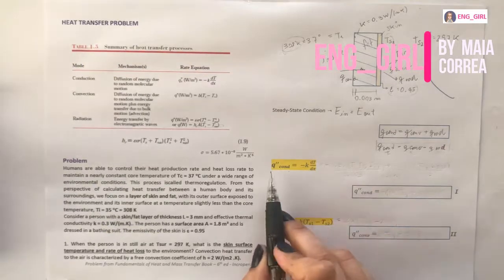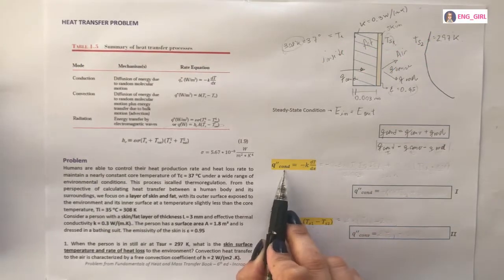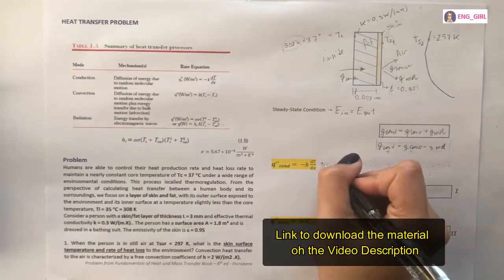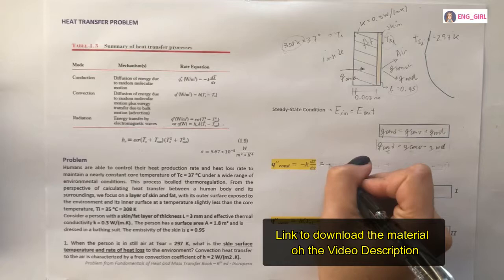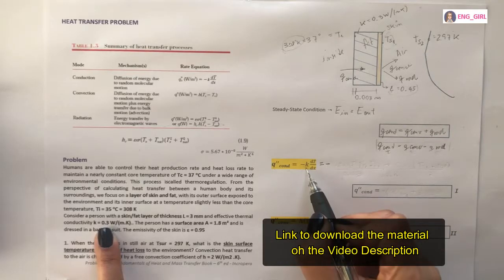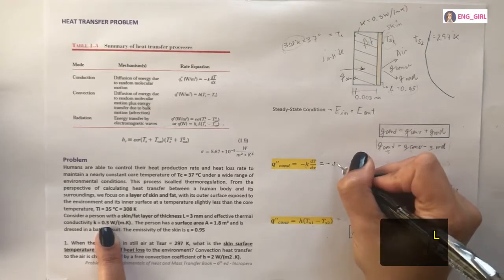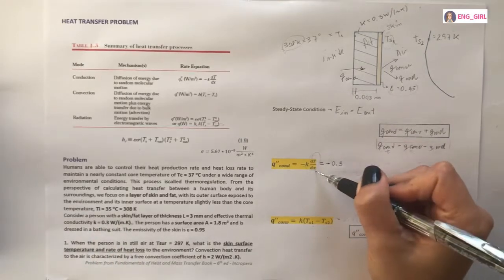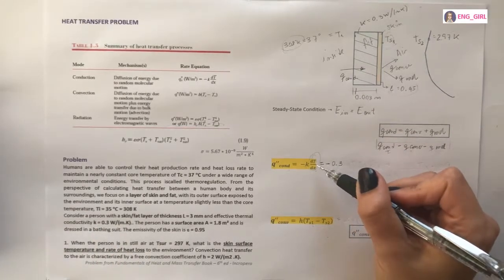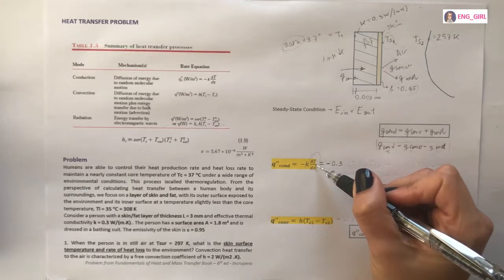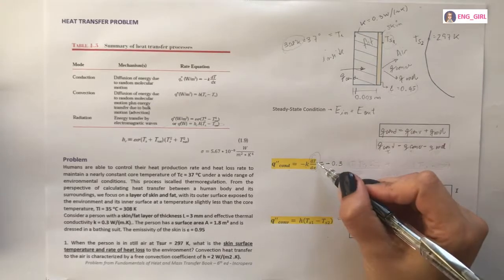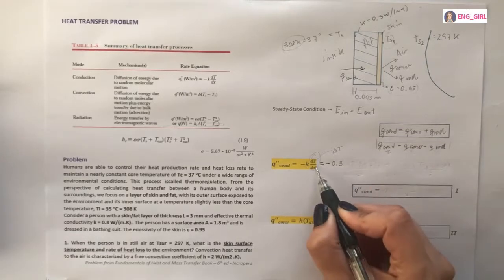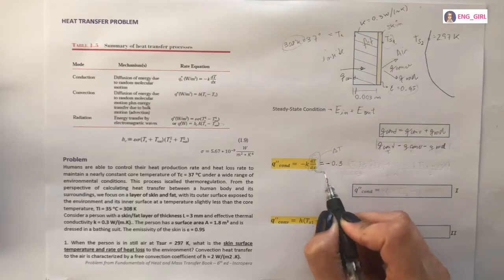To find heat transfer by conduction, we use this equation. It is the thermal conductivity, 0.3. Here, like we are not working with integral or derivative, we can consider delta t, and here and here just the thickness.